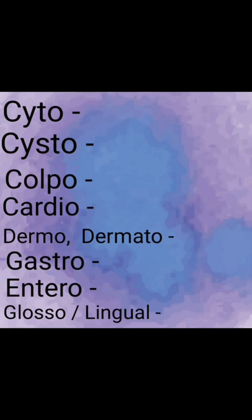Colposcope is an instrument used to do an examination — colposcopy. Colpo relates to the vagina. Next one is cardio, meaning heart. A cardiologist is a specialized doctor who studies the heart and abnormalities in heart disease.